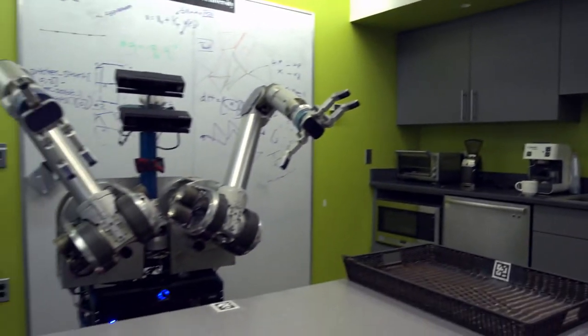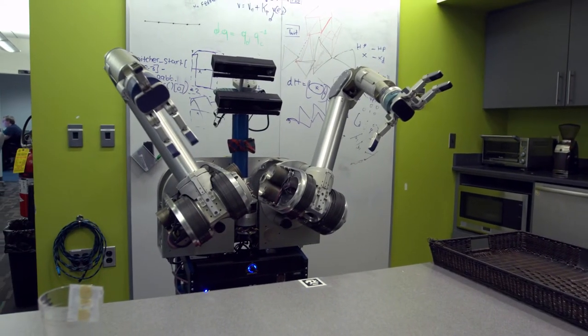HERB stands for Home Exploring Robot Butler. It's a robot that has two arms and a Segway base that we've been building since 2005, and he is our platform for autonomy.